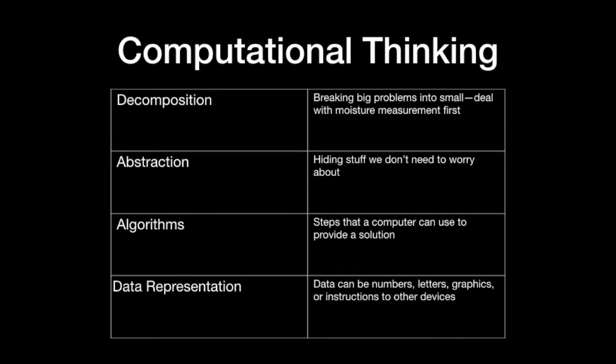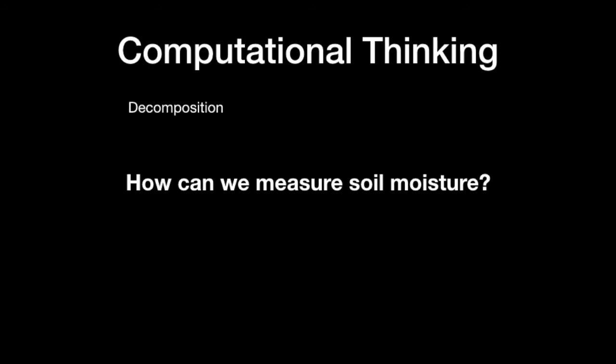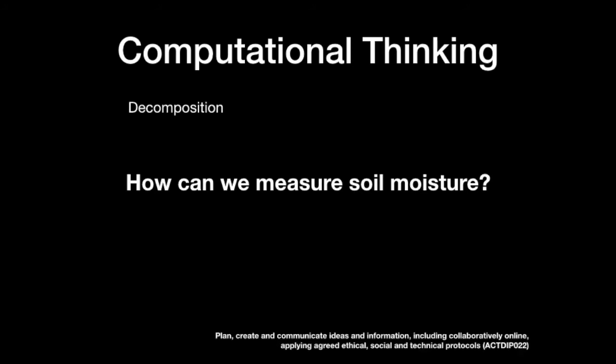We're going to design an algorithm — steps that a computer can use to provide the solution. And we're going to represent data in different ways: not just numbers, letters, and graphics, but also instructions to other devices to make them do things we want. So let's start with the first element of computational thinking, decomposition, and we're only going to look at measuring soil moisture — just that, nothing else.